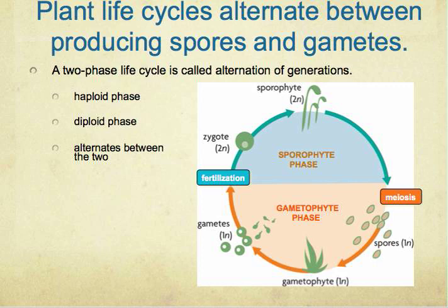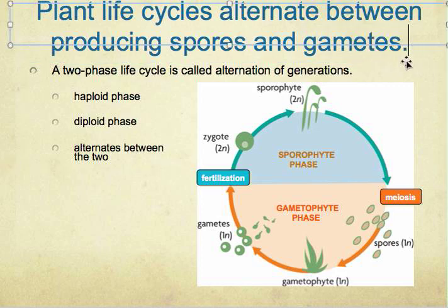Gametes, to make that clear, are basically known as sex cells. We talked about two types of cells: first, the somatic cell, which is basically a body cell. The other type is the germ cell, and the germ cell goes into the process of making gametes — or basically making sex cells.